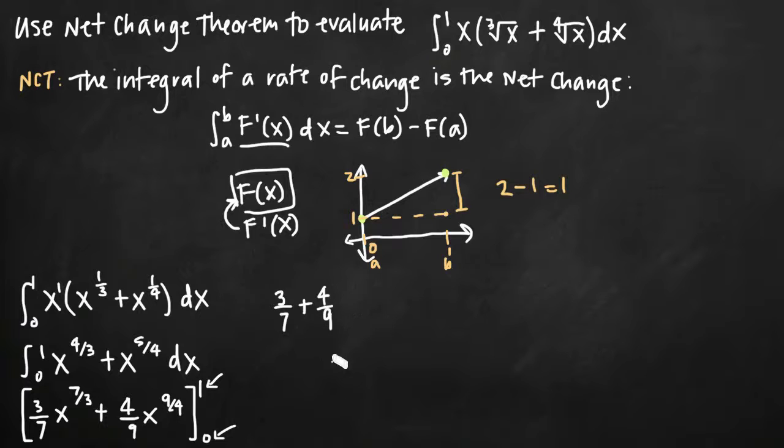When we find a common denominator here of 63, we'll multiply this first fraction by 9 ninths and we'll get 27 over 63. We'll multiply the second fraction by 7 over 7 and we'll get 28 over 63. When we add those together, we'll get 55 over 63, which is an irreducible fraction, and that is our net change.